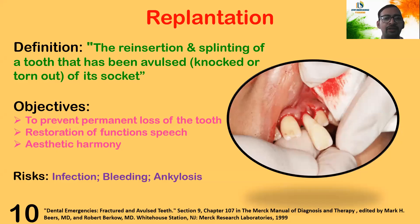Replantation is the most appropriate treatment option — the reinsertion and splinting of the tooth which has been avulsed from the socket. The objective is to prevent permanent loss of the tooth and restore function, speech, and aesthetic harmony. However, there are risks of infection, bleeding, and ankylosis.